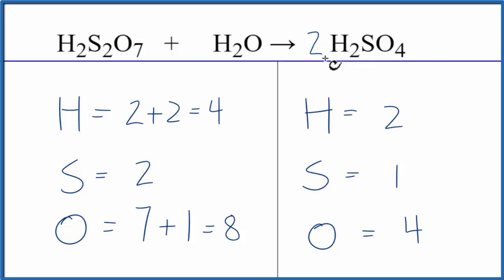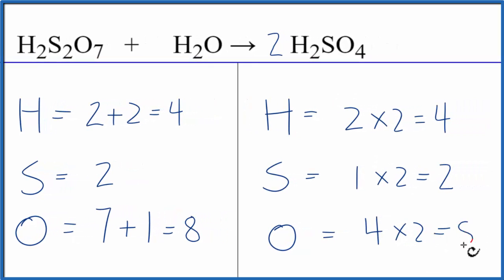This two applies to everything. Two times two, that gives us four hydrogens, one times two, that gives us two sulfurs, and four times two, that gives us eight oxygens, and this equation is balanced.